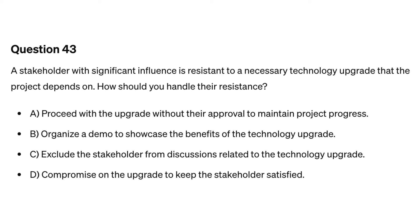Question forty-three. A stakeholder with significant influence is resistant to a necessary technology upgrade that the project depends on. How should you handle their resistance? A. Proceed with the upgrade without their approval to maintain project progress. B. Organize a demo to showcase the benefits of the technology upgrade. C. Exclude the stakeholder from discussions related to the technology upgrade. D. Compromise on the upgrade to keep the stakeholder satisfied.